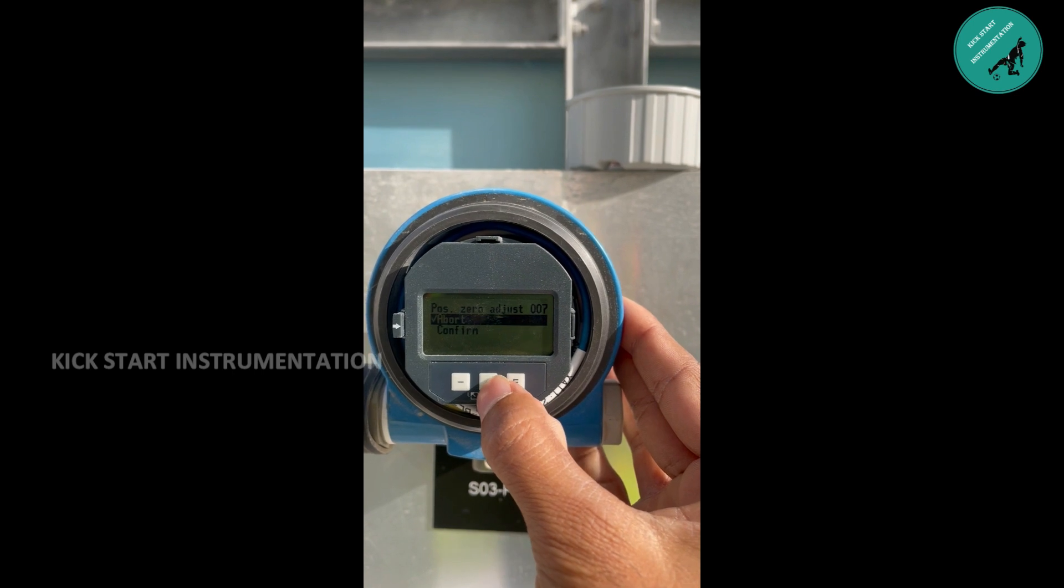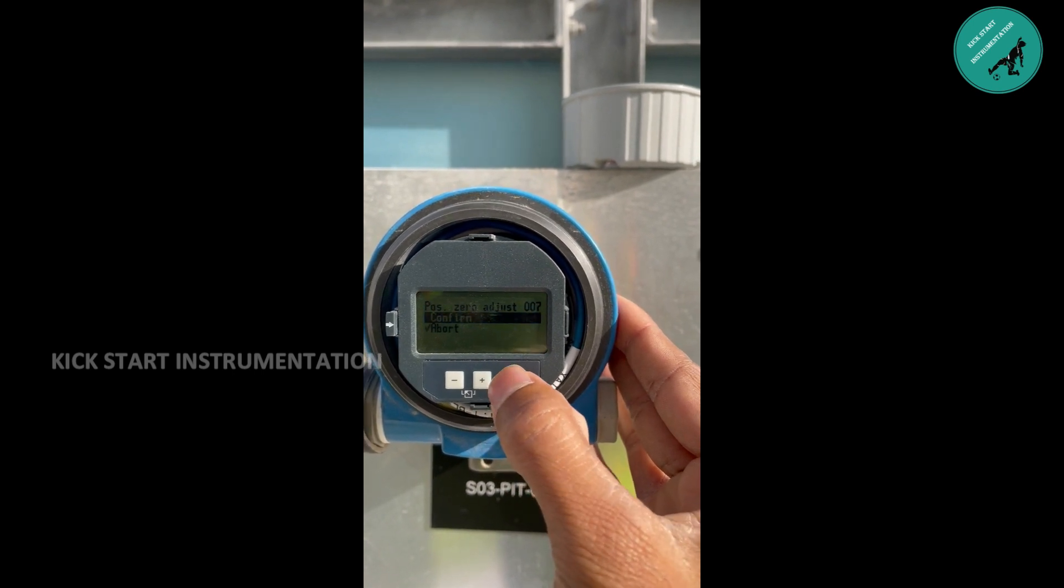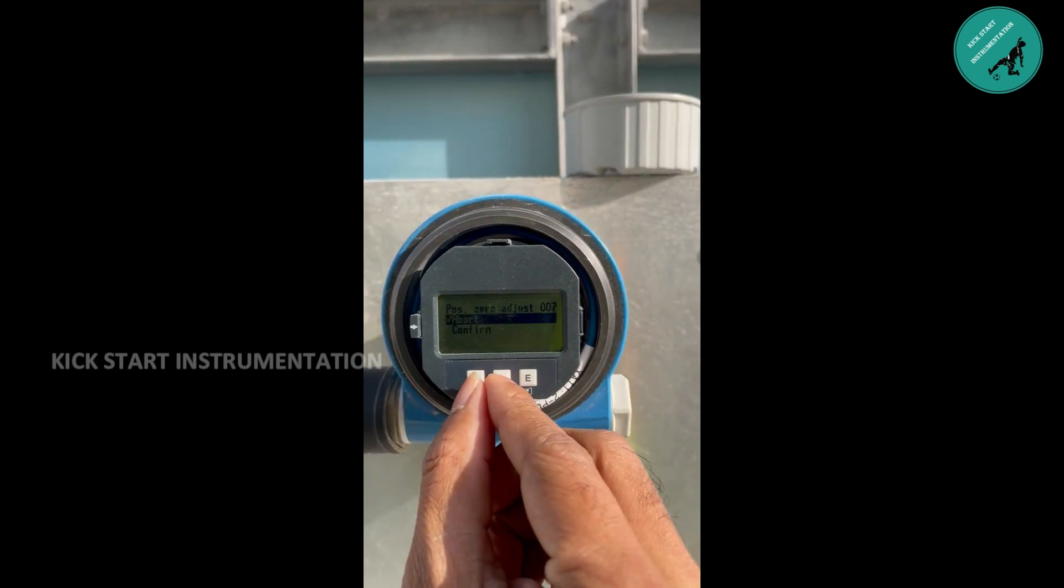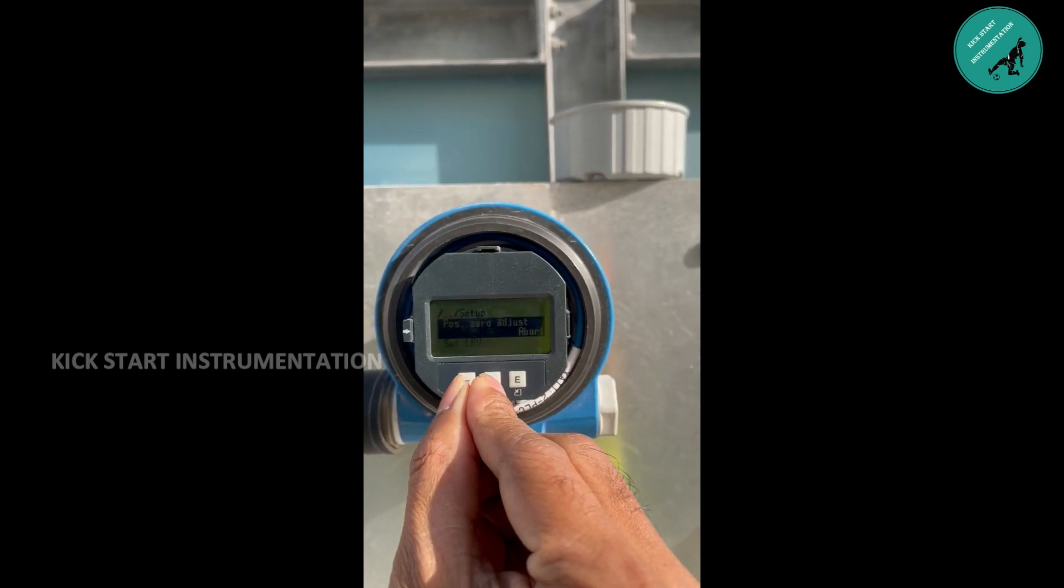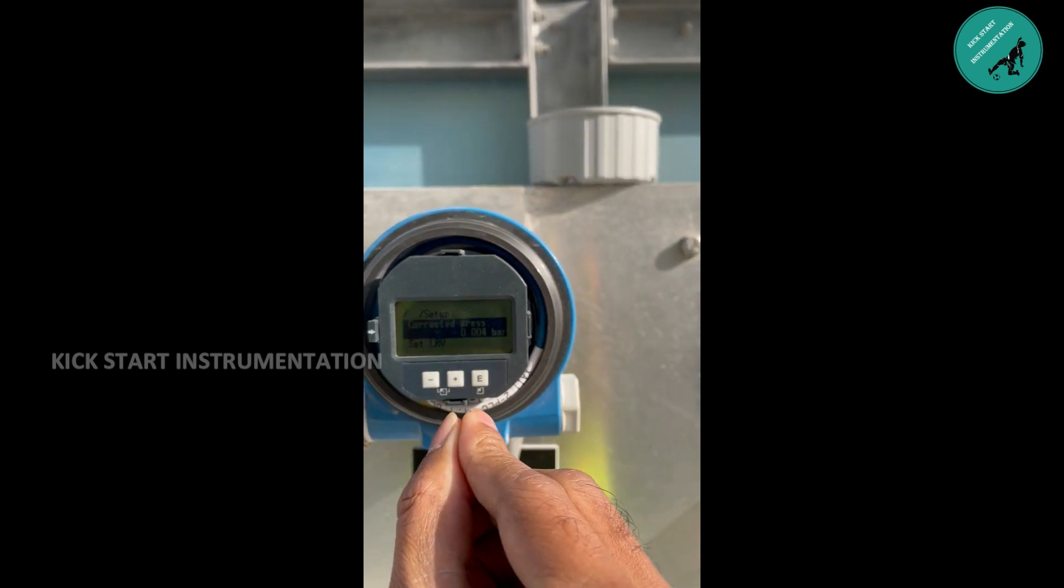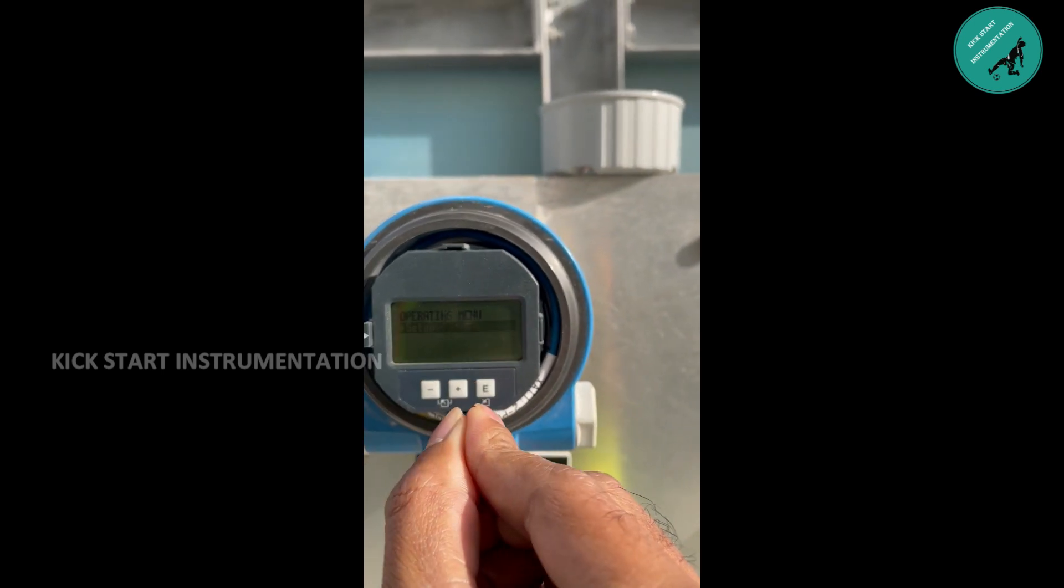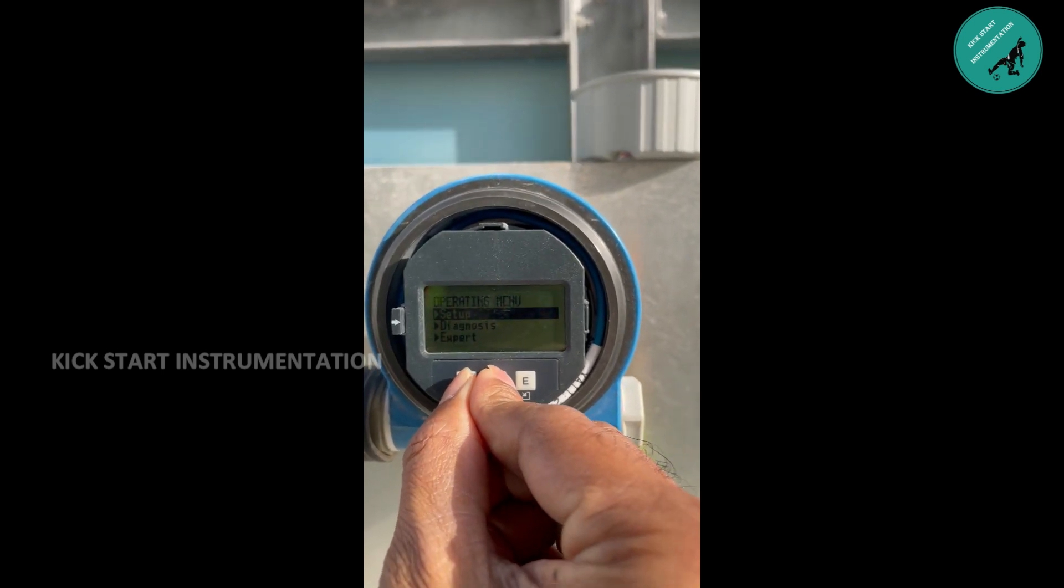There will be two options, abort and confirm. Select confirm and press E to enter. Now press plus and minus simultaneously to exit step by step to come back to main display.